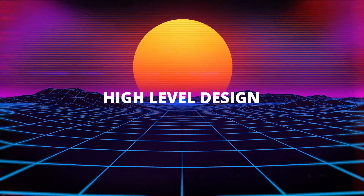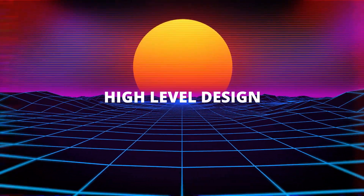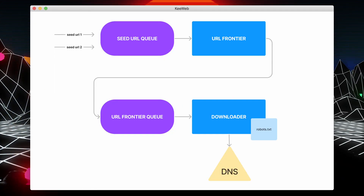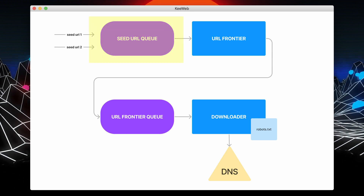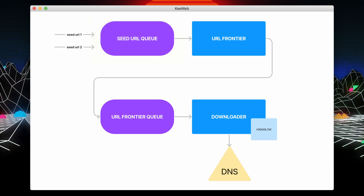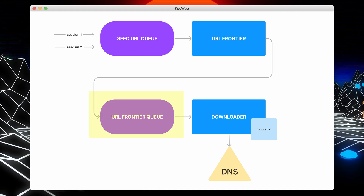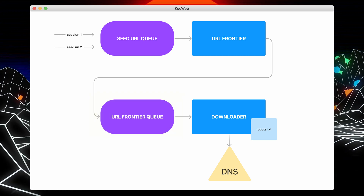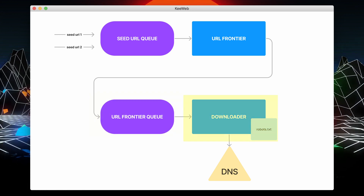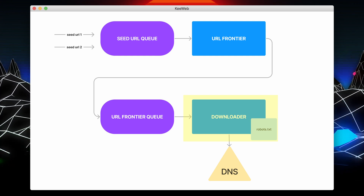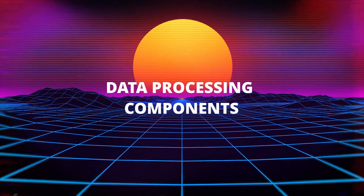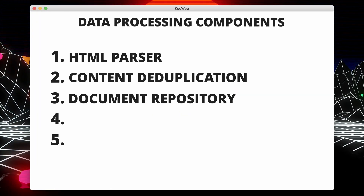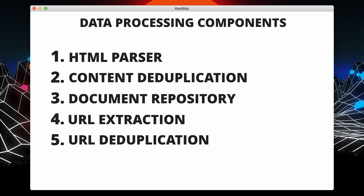Now that we have clear requirements, we can start working on the actual high level design of our web crawler. We have a queue that feeds different kinds of seed URLs into the URL frontier. We can make this system more decoupled by adding another queue in between the URL frontier and the downloader. The downloader then picks a URL from the queue and queries the DNS server to resolve the URLs into IPs. Moving on to the next set of components, we have the HTML parser, content deduplication, document repository, URL extraction, and URL deduplication.